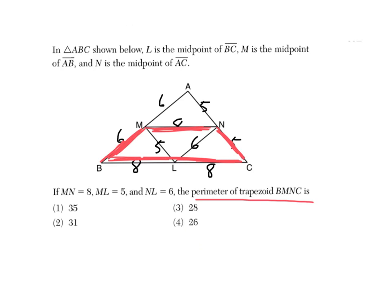So it would be 6 and 8 and 5 and 8 and 8. So 8, 16, 24, 24, and 11 is 35.